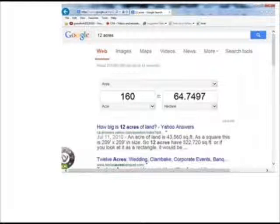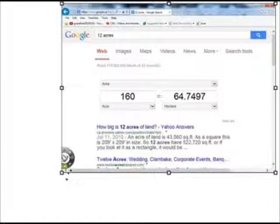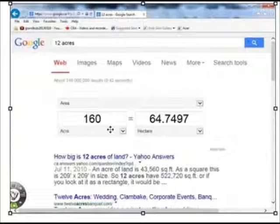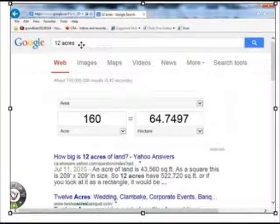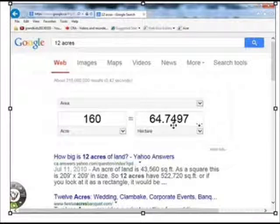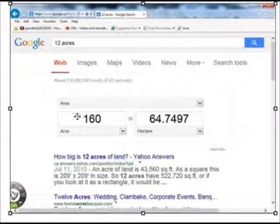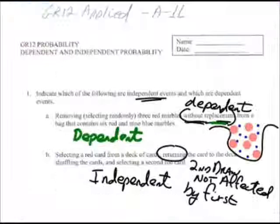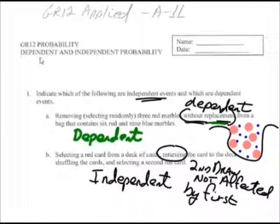Now, of course, the smart way to do all this stuff is just Google it. So all you do is you type in 120 acres on your Google, and it goes, what do you want to do? Convert it to what? But, of course, you can't do that on a test because you don't have a calculator on it. You've got to show your work anyways.